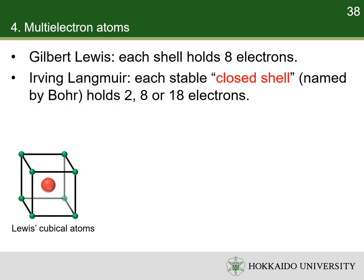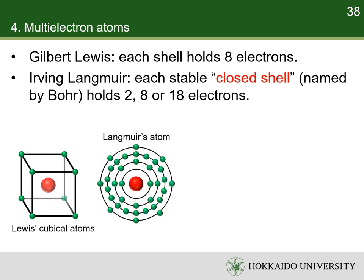In 1919, Irving Langmuir suggested that the periodic table could be explained if the electrons in an atom were clustered such that certain numbers — for example, 2, 8, and 18 — of electrons occupy a set of electron shells. The filled shells, which were assumed to be stable, were called closed shells by Bohr in his updated model in 1922.